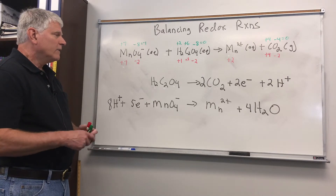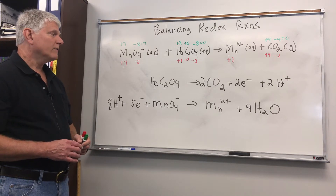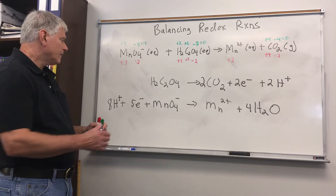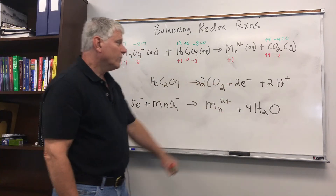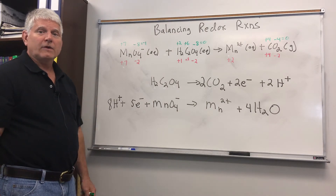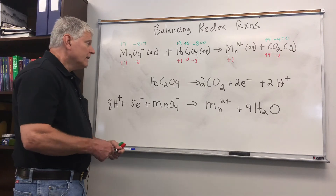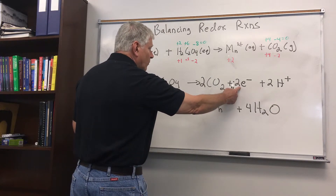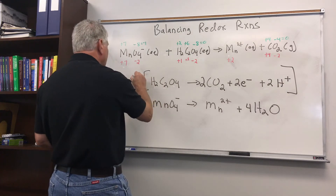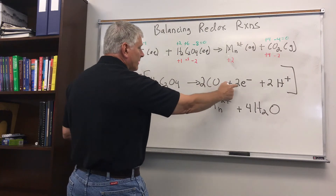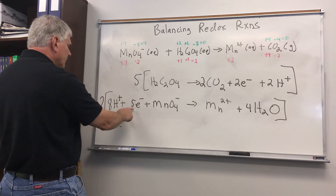So we have everything balancing. Now we can add the two half reactions to get the total reaction. However, when we add the half reactions we have to make sure the electrons cancel. I have 5 electrons on the left and 2 on the right. To cancel them, it's similar to finding a common denominator: the common factor of 5 and 2 is 10. So I multiply the top reaction by 5 to get 10 electrons, and the bottom reaction by 2 to also get 10 electrons.